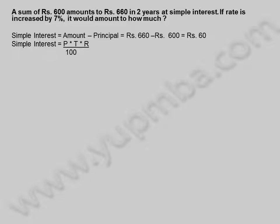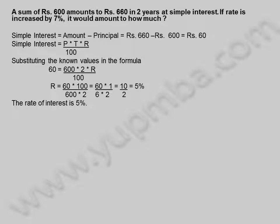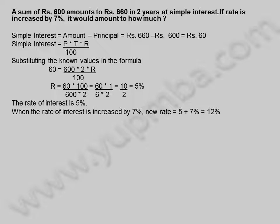Substituting the known values in the formula: 60 equals 600 into 2 into rate divided by 100. Rate equals 60 into 100 divided by 600 into 2, which simplifies to 10 divided by 2, equal to 5%. The rate of interest is 5%.